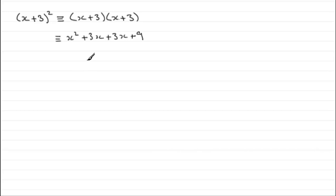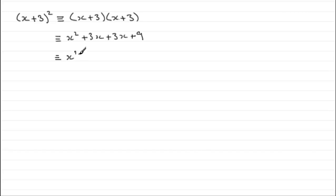So we don't get x squared plus 9. What you can see is we get these two extra terms: 3x and 3x, which come from doing x times 3 and x times 3 again. So what we get is x squared plus 2 lots of 3x — in other words plus 6x — then plus 9.